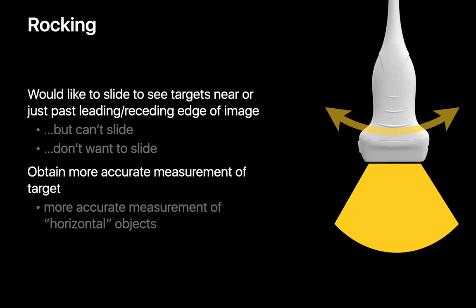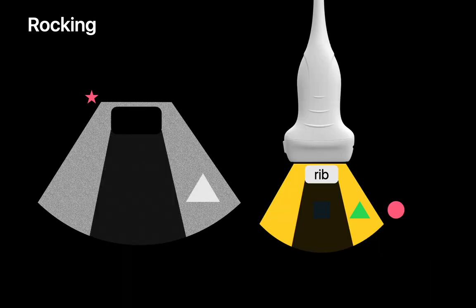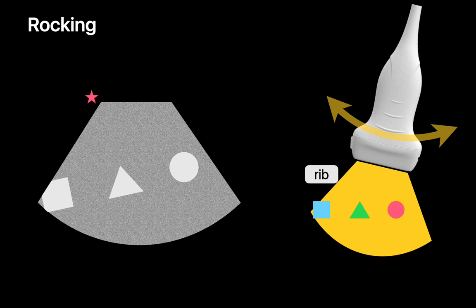Rocking is a motion we use when we prefer to slide to see something near or just past the leading or receding edge of an image but we either can't slide or we don't want to slide. Let's say we need to get a better look at the square that's just past the leading edge of our image but there also happens to be a rib nearby that was immediately above it. If we were to translate our probe we'd see nothing because our target would fall behind the acoustic shadow of the rib. If we pivoted the probe we'd have an opportunity to see the square target behind the rib.